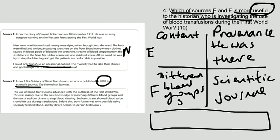So my overall answer will probably look something like this: Source E is very useful to historians investigating blood transfusions during the First World War because Oswald Robertson was a doctor on the Western Front in the First World War and so experienced blood transfusions firsthand.